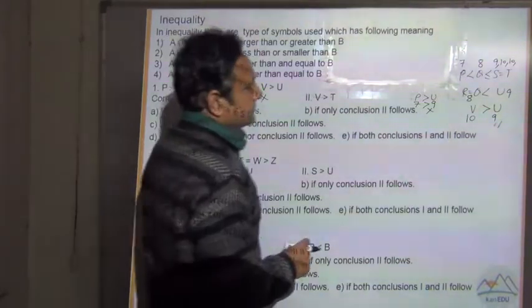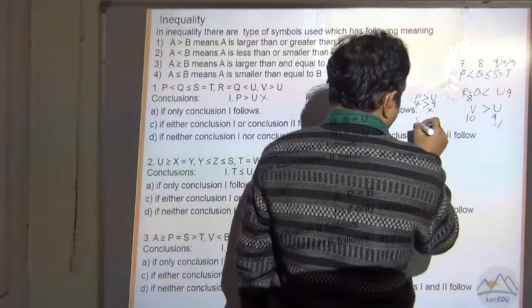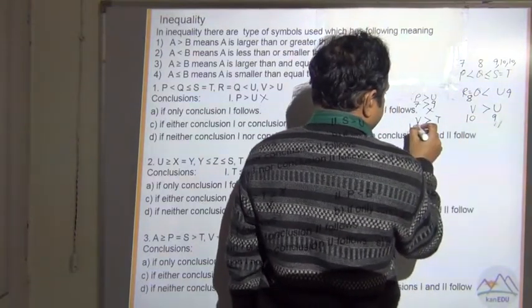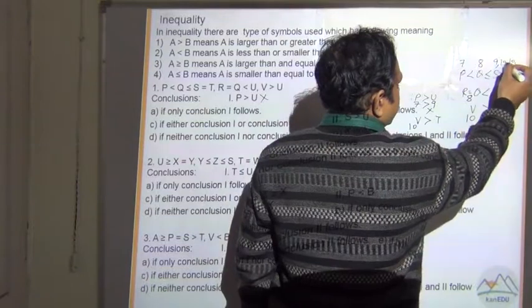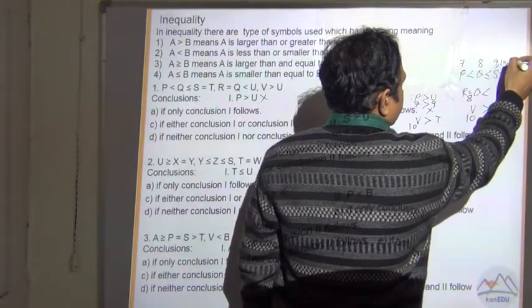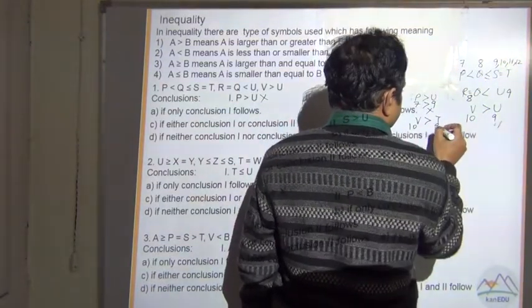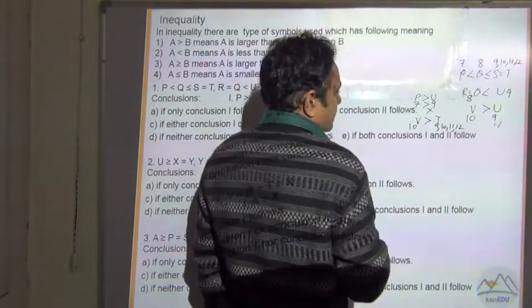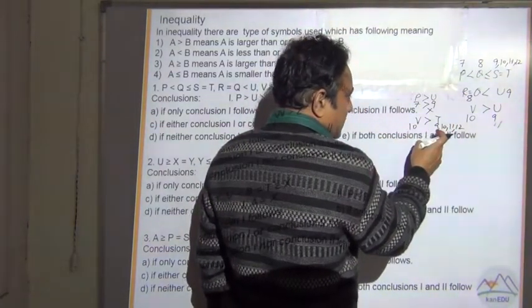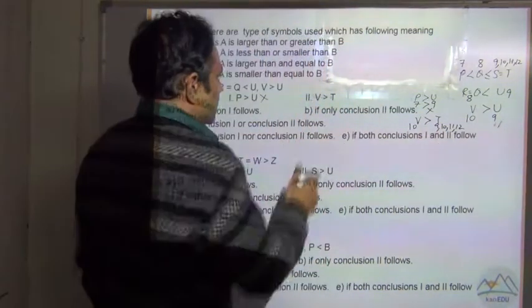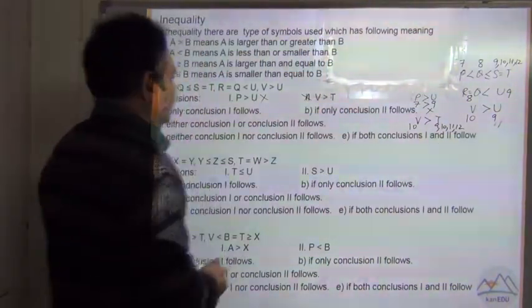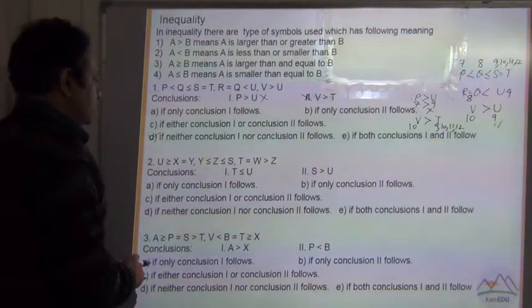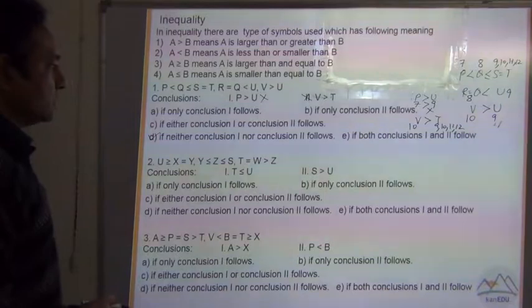Is V greater than T? V is say 10, then T can be 9, 10, 11, 12 — it can be any number. So T can be equal to, less than, or greater than — this conclusion is also not definite and does not follow. So the answer is D: neither conclusion 1 nor conclusion 2 follows.